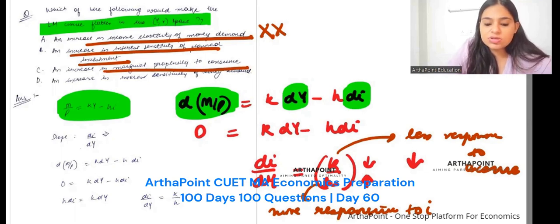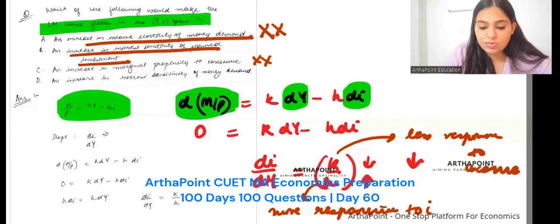Increase in marginal propensity to consume. Now that's not coming anywhere in this question. Increase in interest sensitivity of money demand. Yeah, that's exactly what we want.